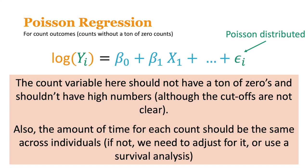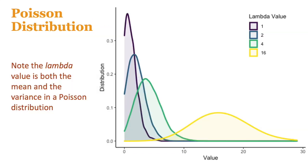The next one is Poisson regression, and these are for count outcomes — really counts without a ton of zero counts. I'll show some distributions so you can get an idea. The way that Poisson works is that you're going to have a Poisson-distributed error term, and your link is going to be a log. One thing to note is there's not a clear cutoff of where there's just too many zeros. If you're working with these kinds of data a lot, it's something you'll start to see.